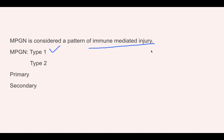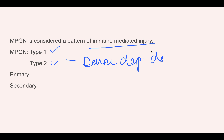MPGN is divided into two types: Type 1 and Type 2. Type 2 is also known as dense deposit disease. The reason for this classification is that Type 1 and Type 2 have totally different pathogenesis. However, on light microscopy the appearance of both types is similar, so they are collectively studied under MPGN. Type 2 comes under complement-mediated glomerulopathies.